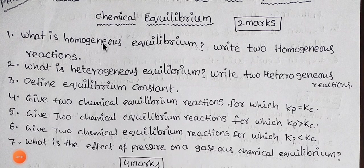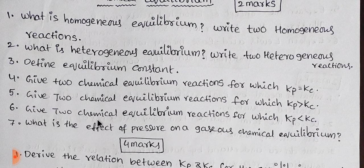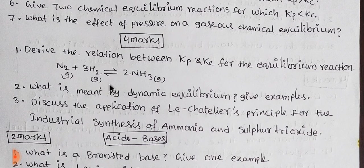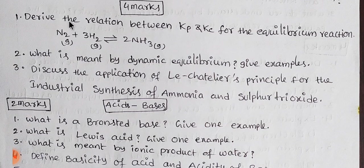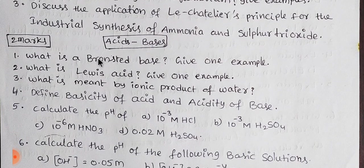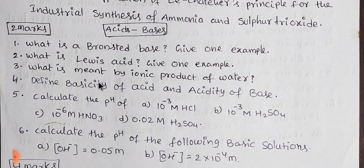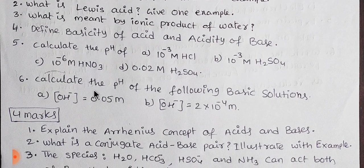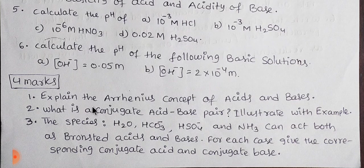Next one is chemical equilibrium. Chemical equilibrium and acid-base together have 6-mark weightage — 2 marks and 4 marks. Chemical equilibrium is 7 marks. Le Chatelier's principle is important. We have to cover the Kc-Kp relation. For acid-base, 2-mark and 4-mark questions include conjugated acid-base pairs and Bronsted acids and bases.